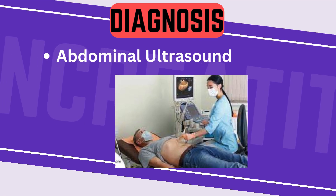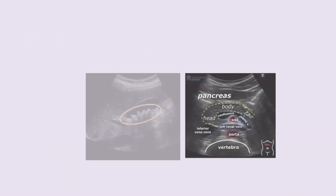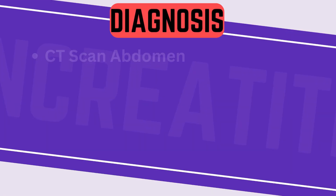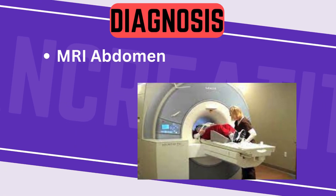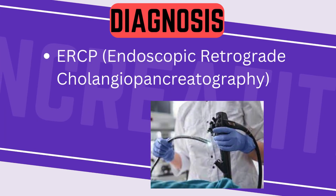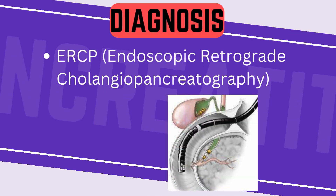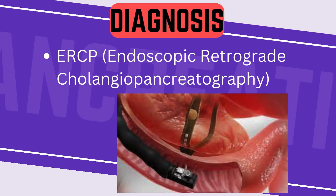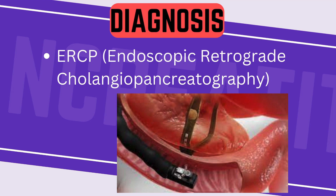6. Abdominal ultrasound is performed to scan the pancreas and surrounding structures, helping identify inflammation and potential causes like gallstones. 7. CT scan of the abdomen provides detailed images of the pancreas and surrounding areas, helping assess the severity and extent of inflammation. 8. MRI may be used to visualize the pancreas and ducts, particularly in cases where a CT scan is inconclusive. 9. ERCP — endoscopic retrograde cholangiopancreatography — is performed in some cases, particularly if there is suspicion of gallstones or ductal abnormalities. It involves passing a flexible tube through the mouth and into the small intestine to inject contrast dye into the pancreatic duct; X-rays are then taken to visualize any blockages or abnormalities.